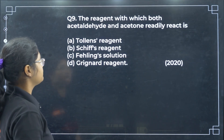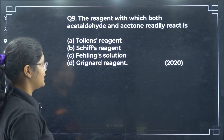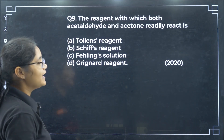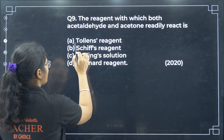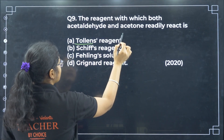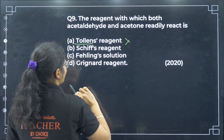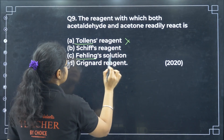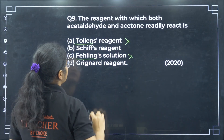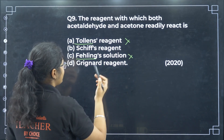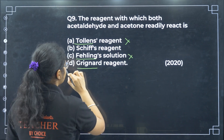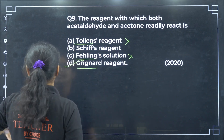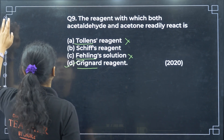The reagent with which both acetaldehyde and acetone will react: Tollens reagent — ketone will not react. Fehling's reaction — ketone will not react. But with Grignard reagent, both of them will react. So option D.